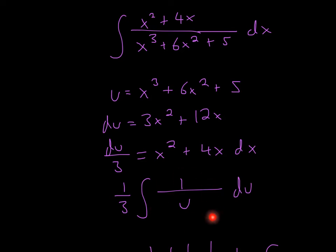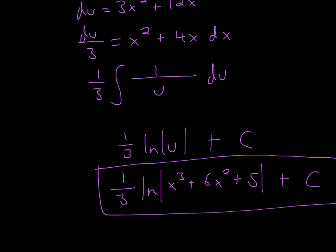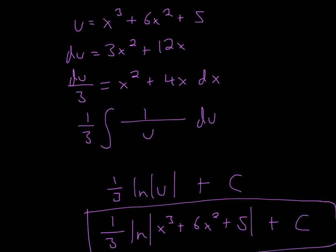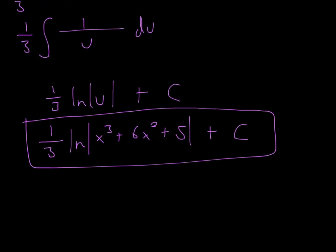So this is something you just have to memorize, but the integral of 1 over u is ln of u. So that's ln of u. You keep the 1 third. But this isn't the final answer, because we have to plug in u, and since I said u is this, you have to plug that in.